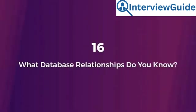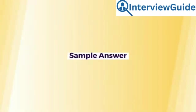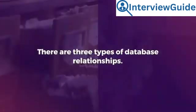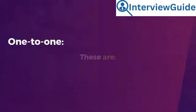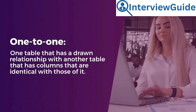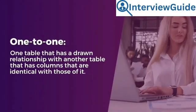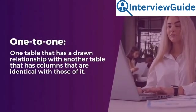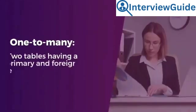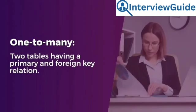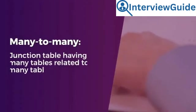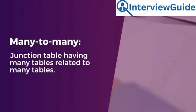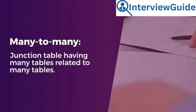Question 16: What database relationships do you know? Sample answer: There are three types of database relationships. These are: one-to-one — one table that has a drawn relationship with another table that has columns identical with those of it; one-to-many — two tables having a primary and foreign key relation; and many-to-many — a junction table having many tables related to many tables.